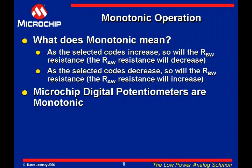While the error that may occur in the system is important, another characteristic is equally important: monotonic operation. Being monotonic ensures that as the wiper code value increases, the resistance increases as well. For a digital potentiometer, this is analogous to an ADC's no-missing-code specification.